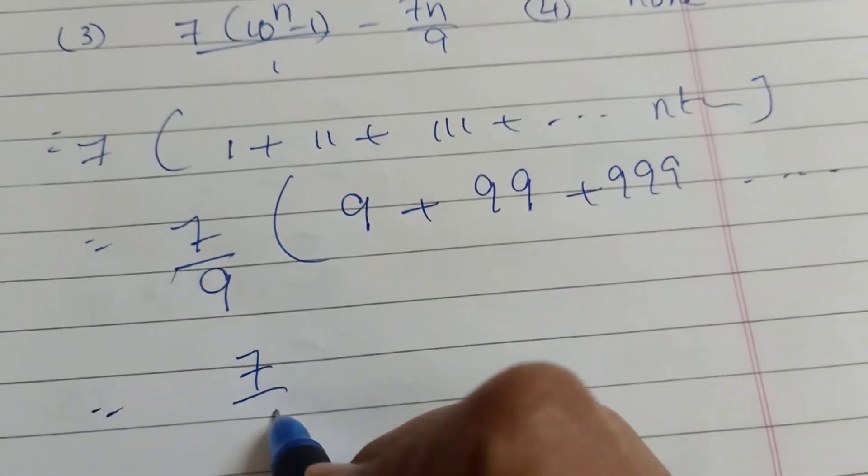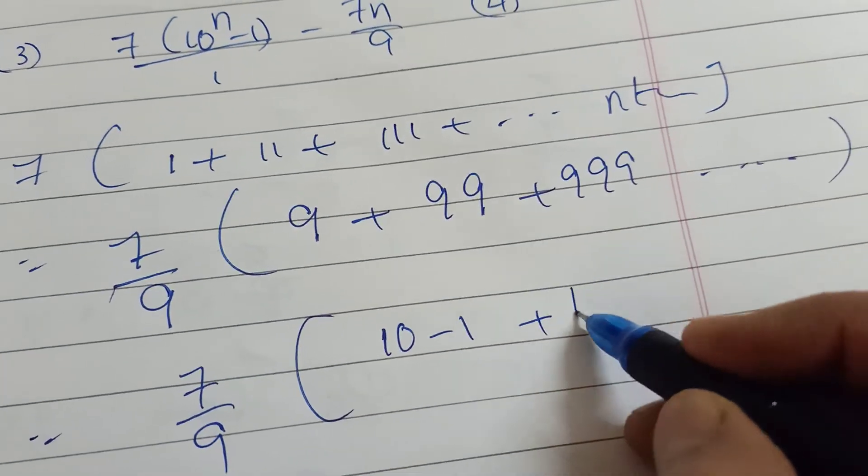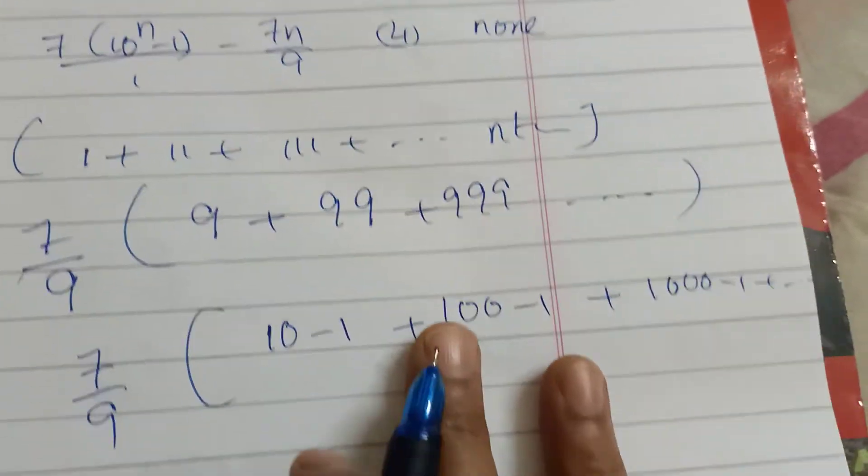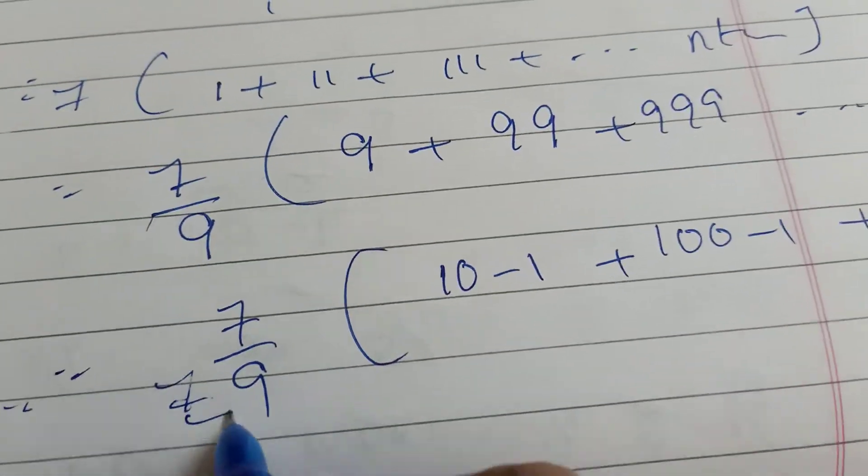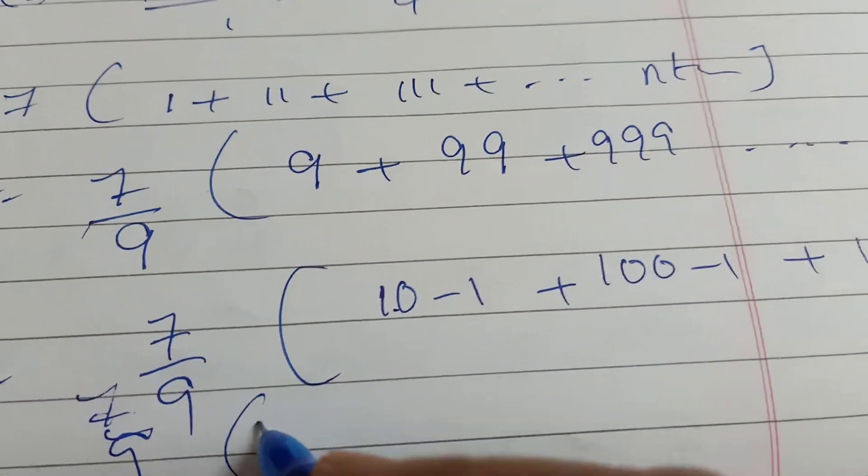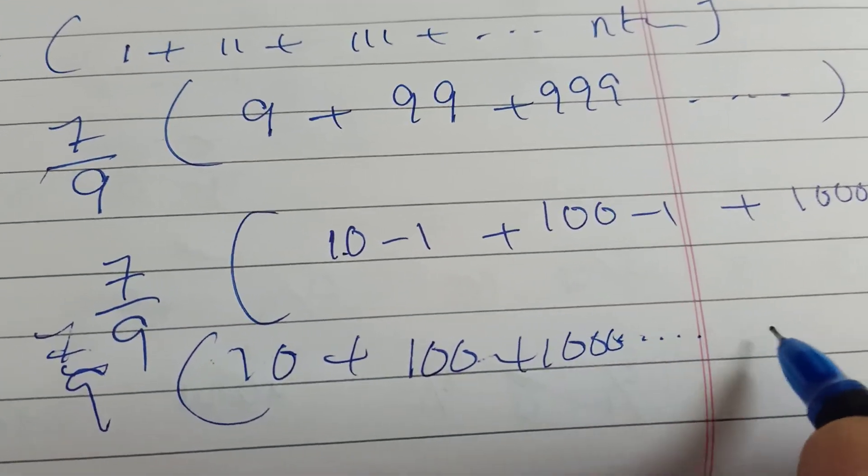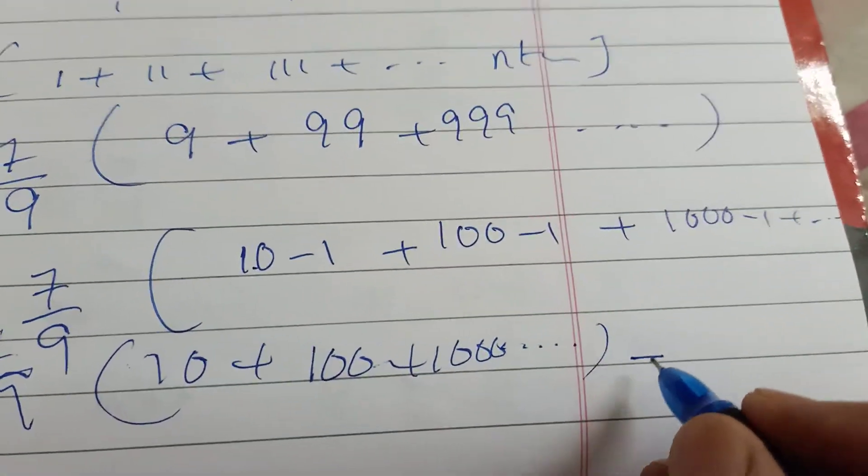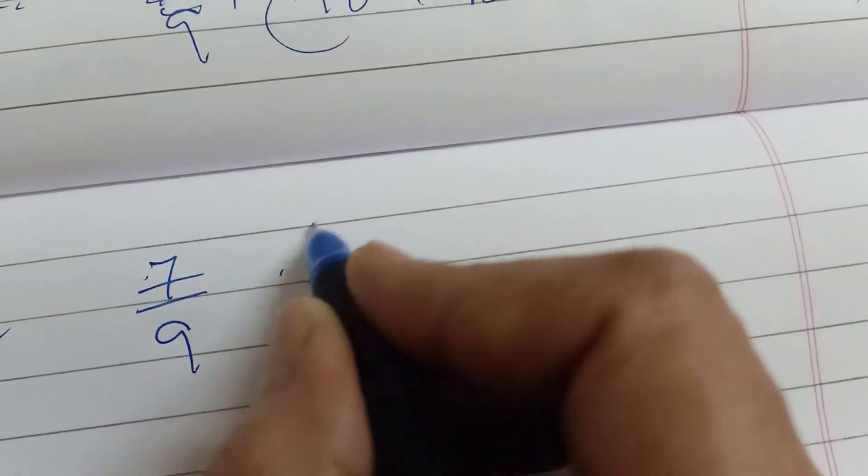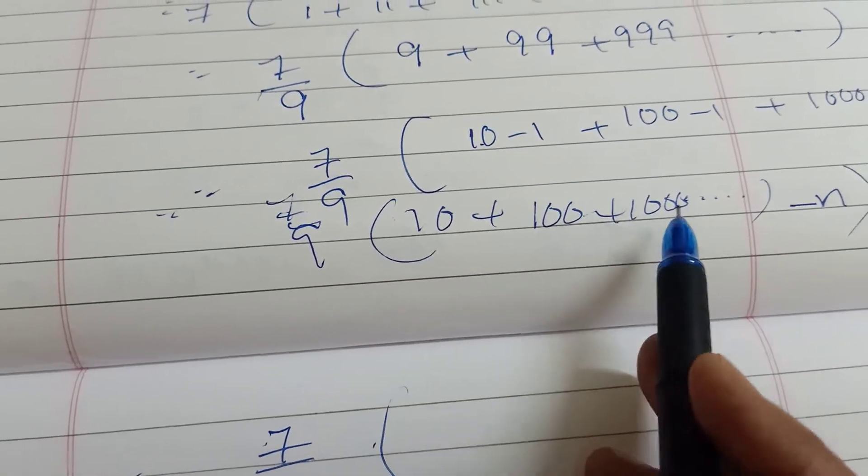Here we have 7 by 9 times the series (10 minus 1 plus 100 minus 1 plus 1000 minus 1 and so on). This becomes 7 by 9 of the series (10 plus 100 plus 1000) minus n terms.